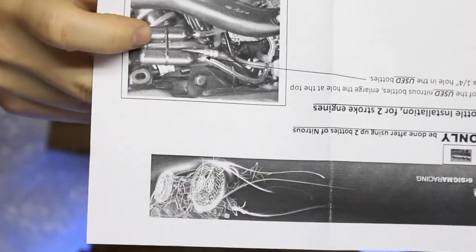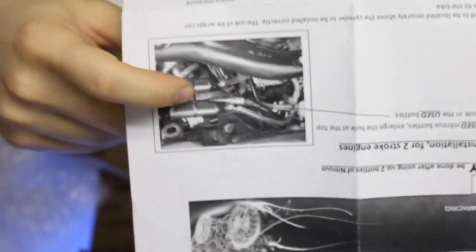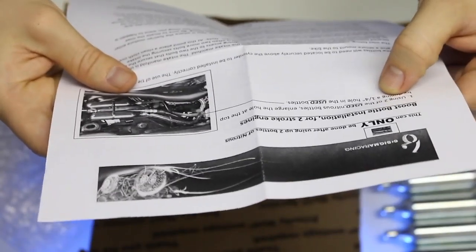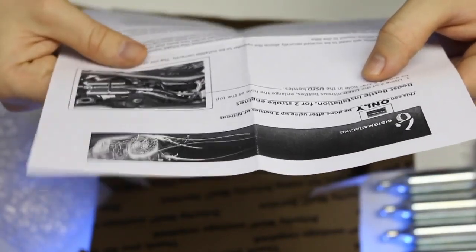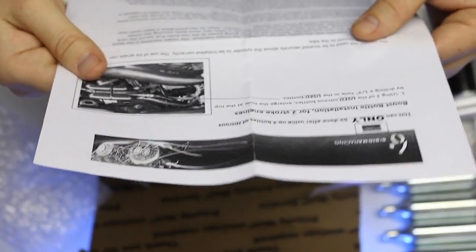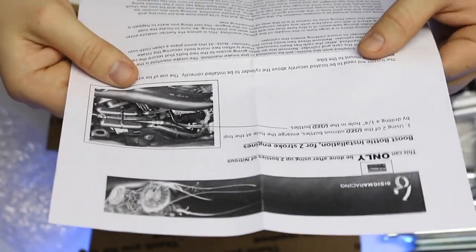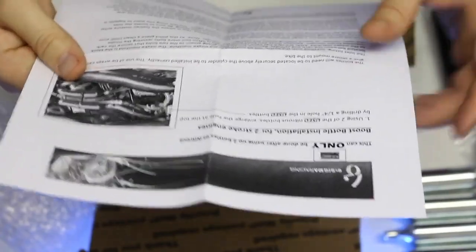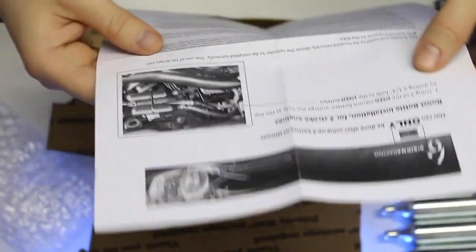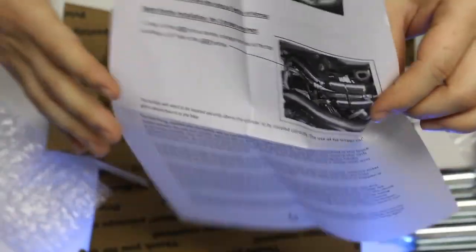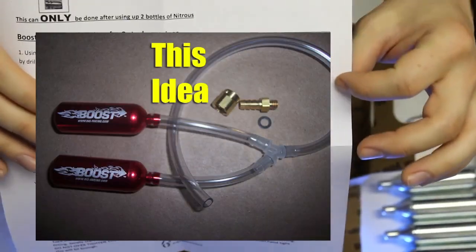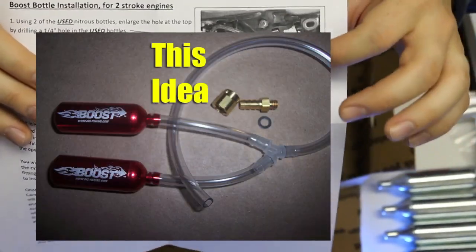Okay, so guys, this was the picture I was telling you about. When you see this thing installed you'll see what I mean by this, but basically I just don't understand what they're talking about with this picture here. Because it says using two of the used nitrous bottles, enlarge the hole at the top by drilling a quarter inch hole in the used bottles. I don't know about that, I'm going to have to look into that. Maybe off the top of my head, because there are boost bottles, that I think this might be something to sort of enlarge your cylinder head, I think that's what they're talking about.